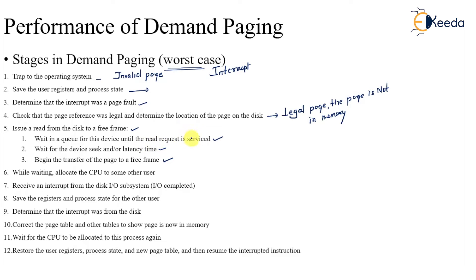First we wait for the device queue, then wait for the disk seek and latency time — that is the disk read time — and then begin the transfer to bring the page into the frame. While waiting, allocate the CPU to some other user, so the CPU will not sit idle. That is the multiprogramming advantage. The disk will then send an interrupt when the I/O is completed.